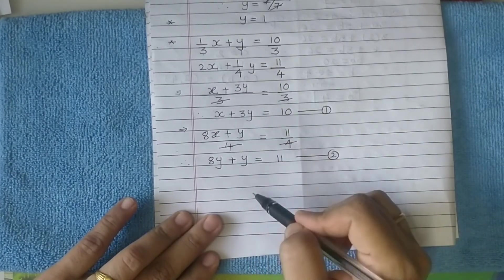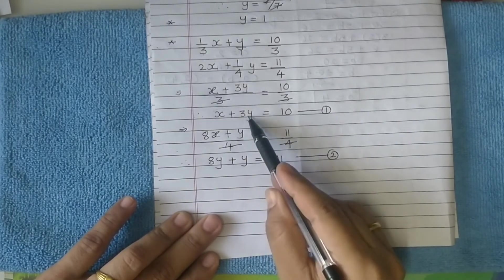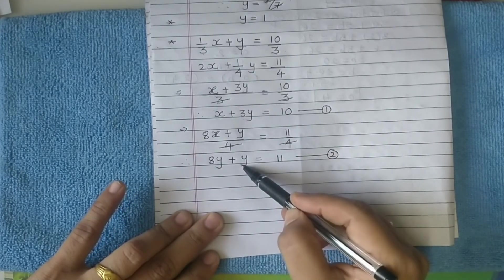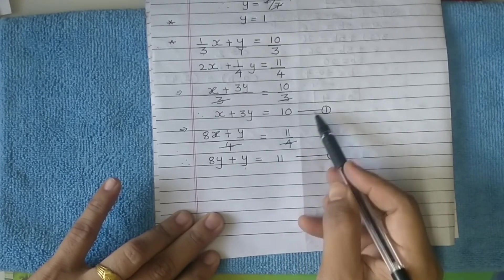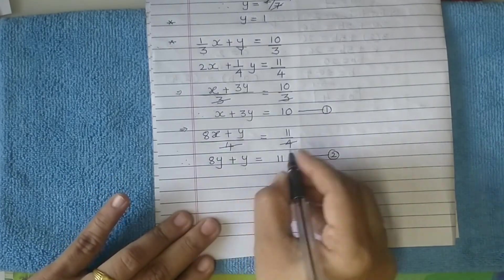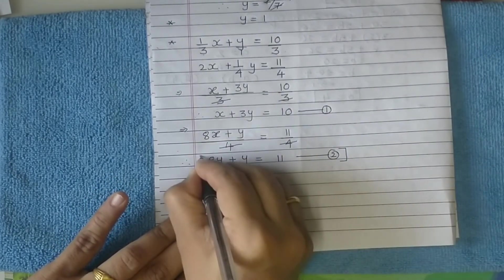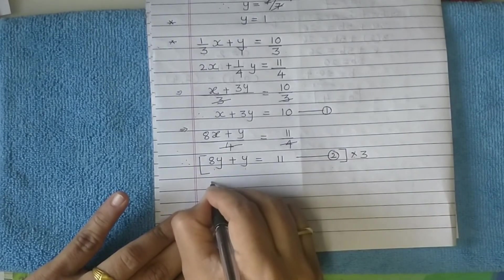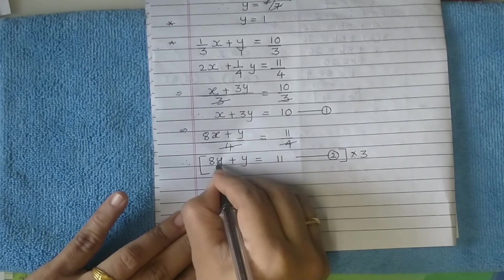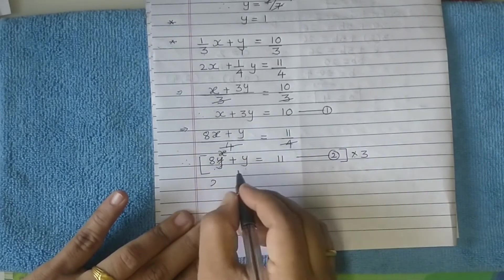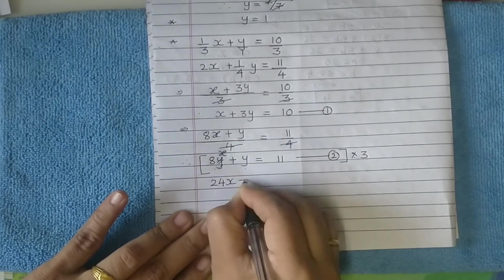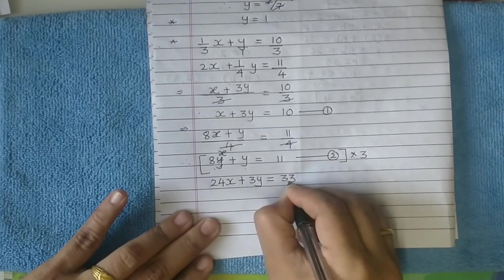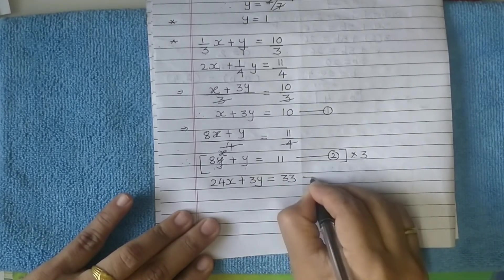So either one of them you can make equal. For example, I will make the coefficient of y the same. Here the coefficient is 3, here it is 1. So I need not multiply equation 1 by 1, it will be as it is. But equation 2 I need to multiply by 3. So multiplying this equation by 3, what do you get? 8 times 3 is 24x plus 3y equals 33. You can name it equation 3.